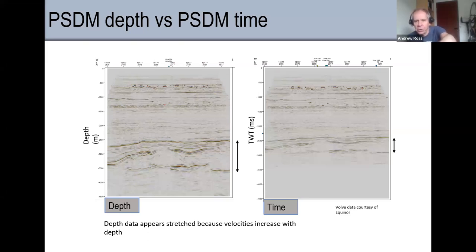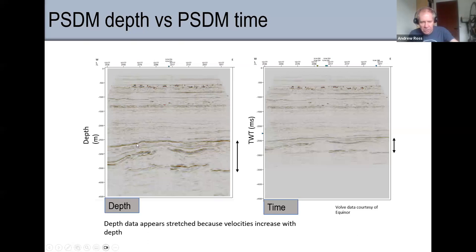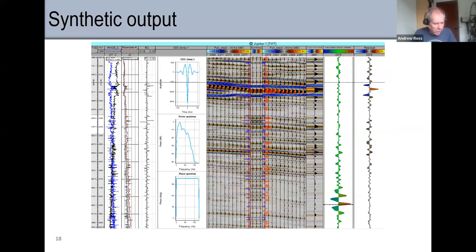PSDM has fixed the lateral variations but it hasn't necessarily fixed the vertical variations — those we can try and fix ourselves. Talking to people around the industry, some are just interpreting the depth data and correcting it, but others are doing it what I'd call the more correct way. The correct way takes more time, and I think that's why some people are taking a slightly different approach. I mentioned well ties — we'll talk about that because I need to get a wavelet for my inversion.